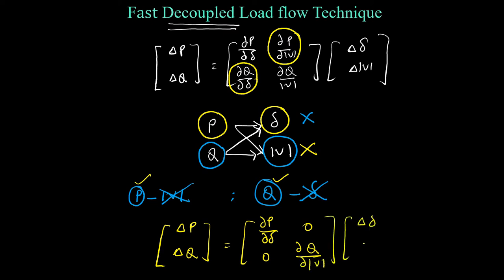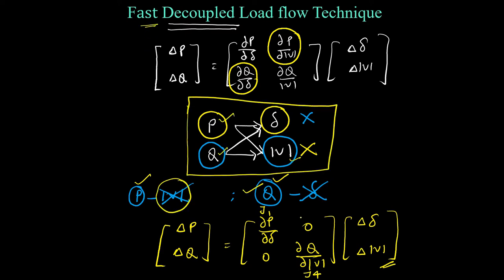Thereby, as compared to the NR method, the Fast Decoupled method will be easier and simpler. Why? Because J2 and J3 elements have become completely zero. So now you will have only the J1 and J4 elements. That is why the name includes 'faster.' This is simple, but since we are taking some approximations — because practically these values are not exactly zero but very small compared to the other two relations — we are taking approximations in this Fast Decoupled method.